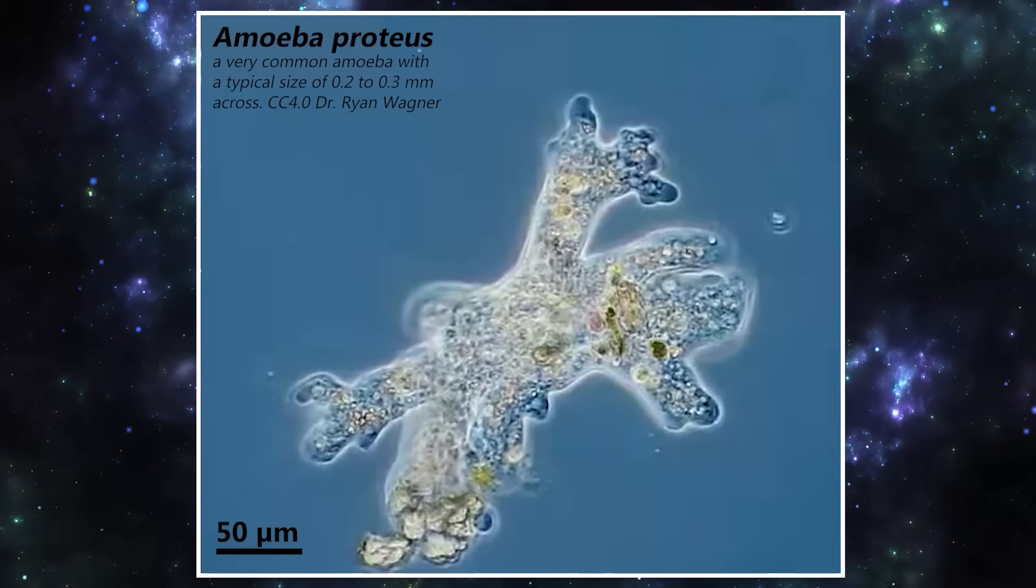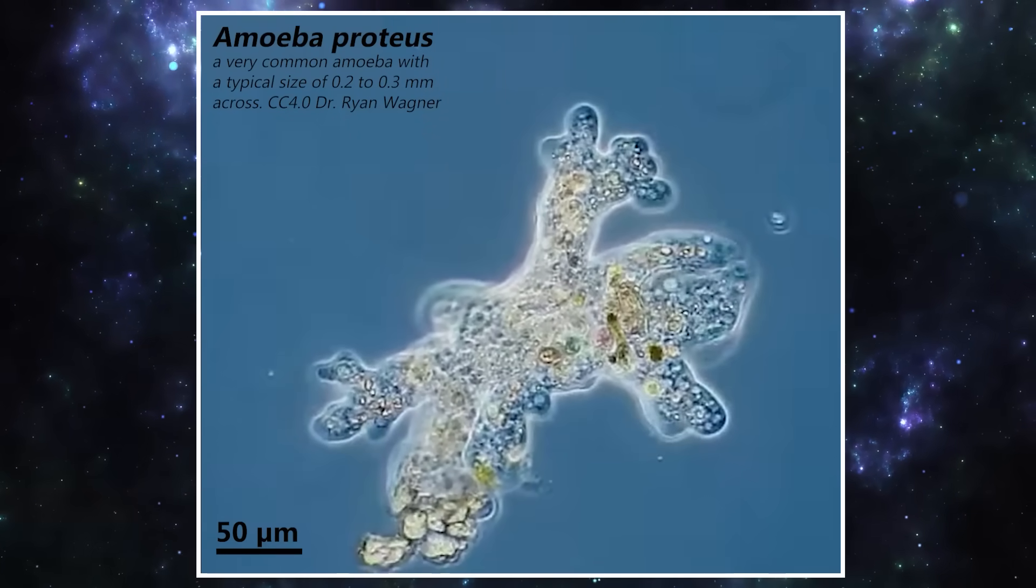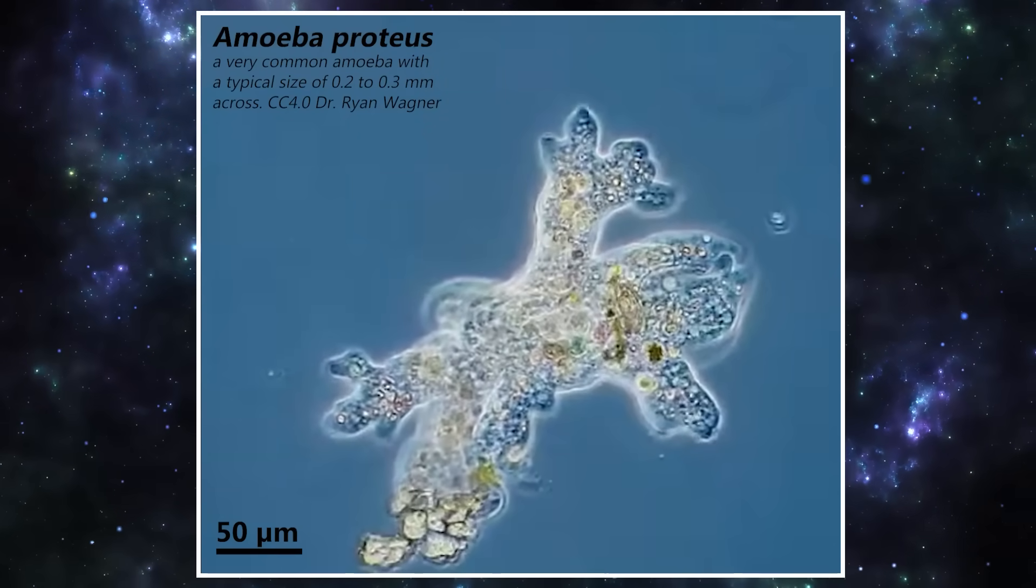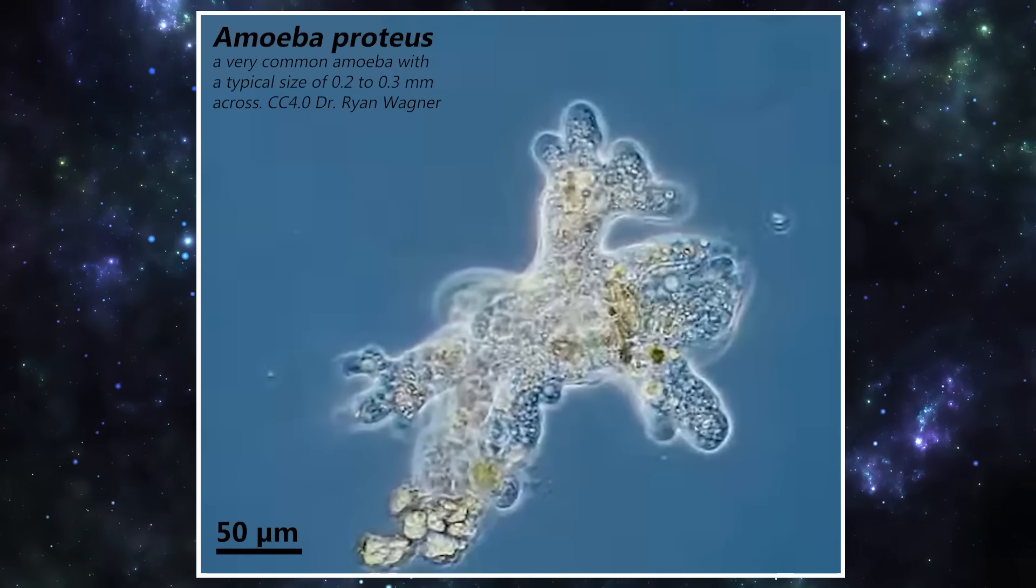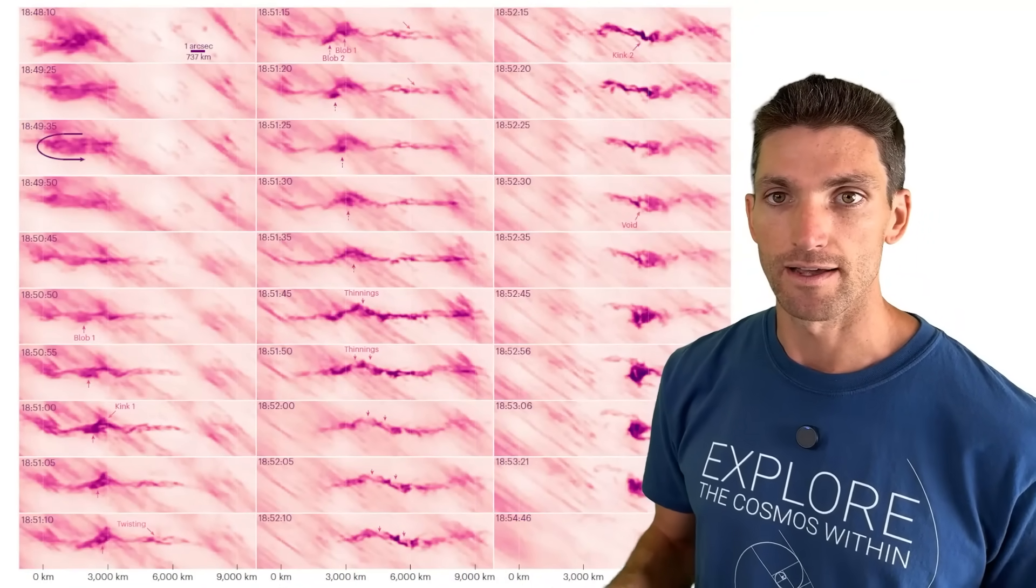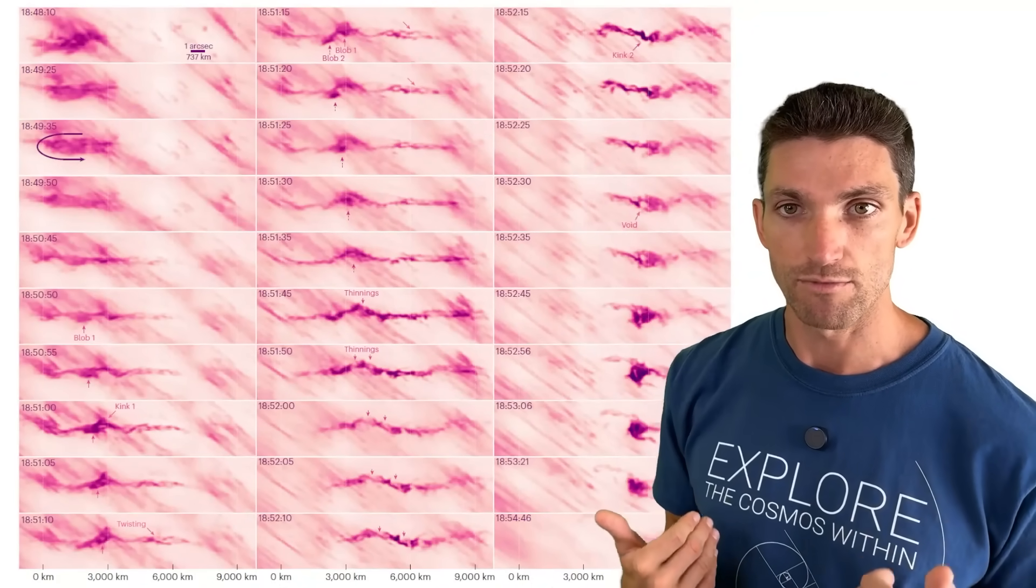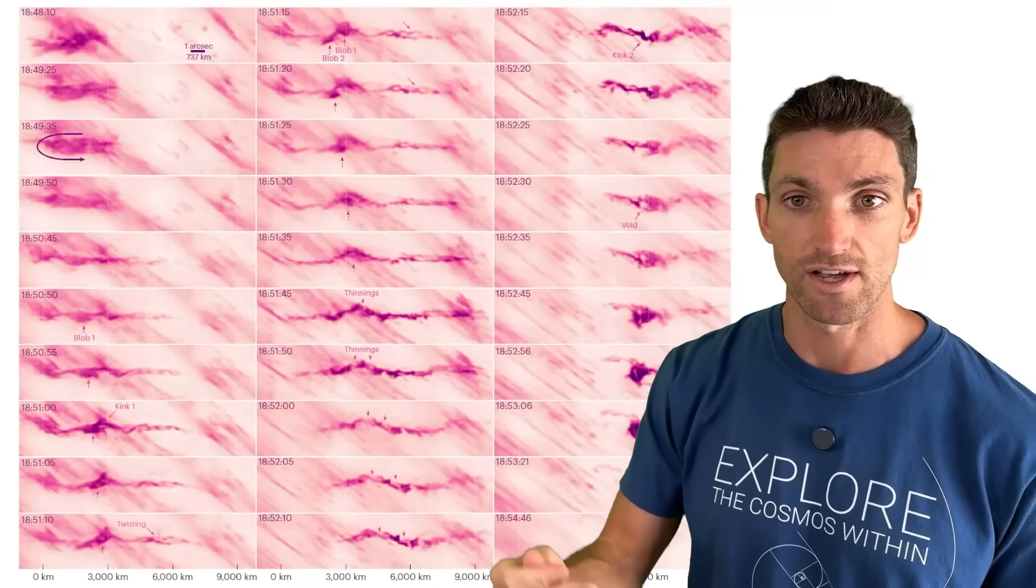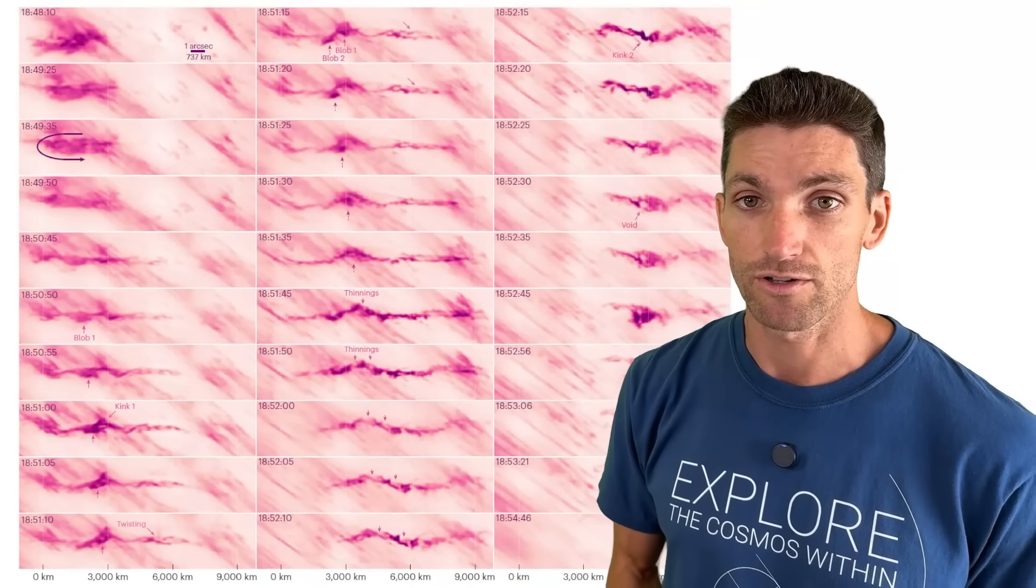Well, a typical amoeba is about 0.2 to 0.3 millimeters across. So it's off by one order of magnitude. It's not perfectly scale invariant as it relates to an amoeba to the human body and this plasmoid to the sun, but it's pretty darn close.